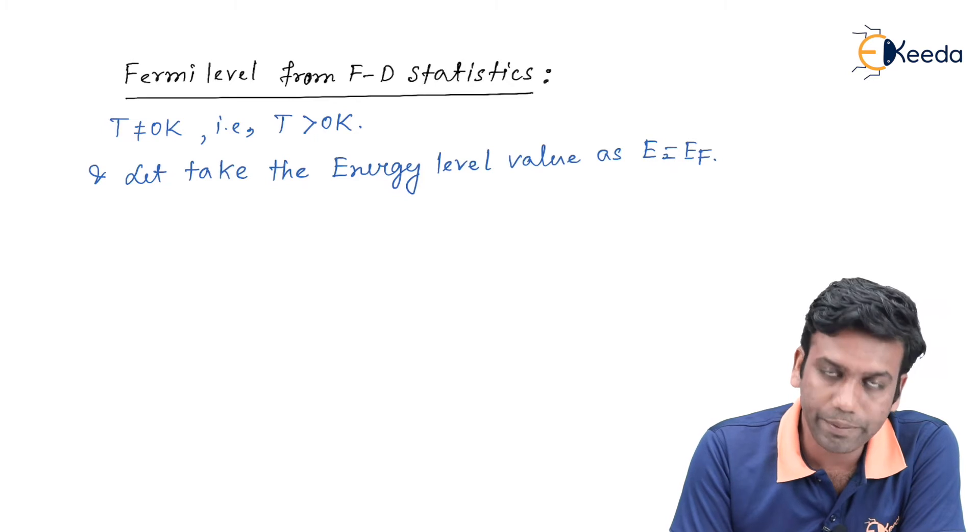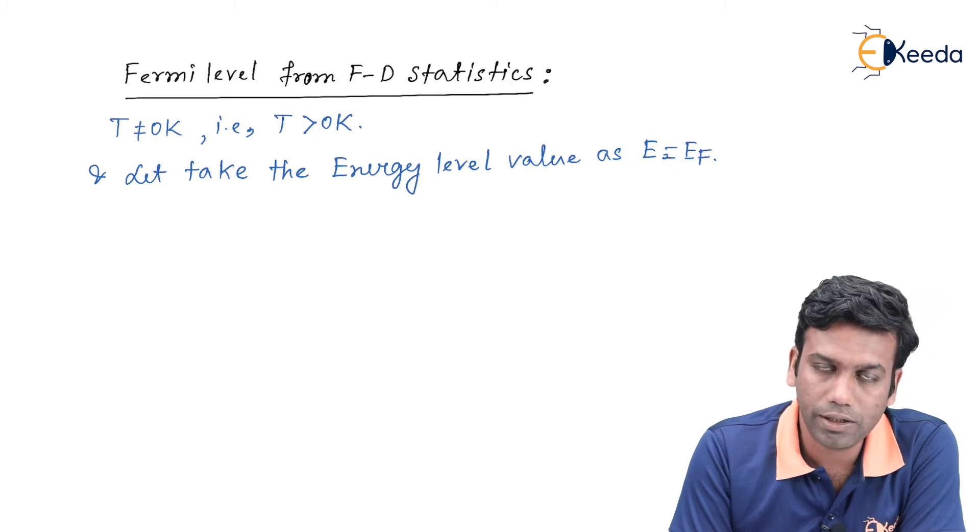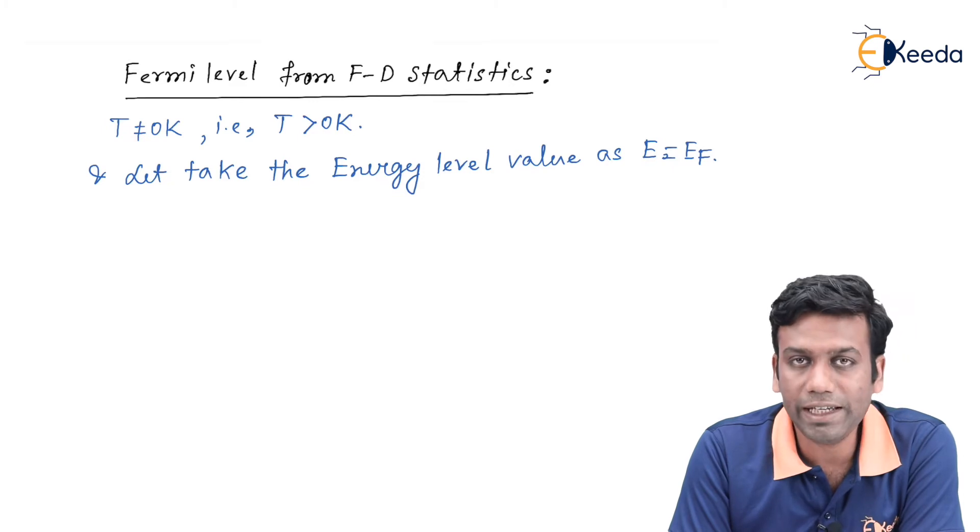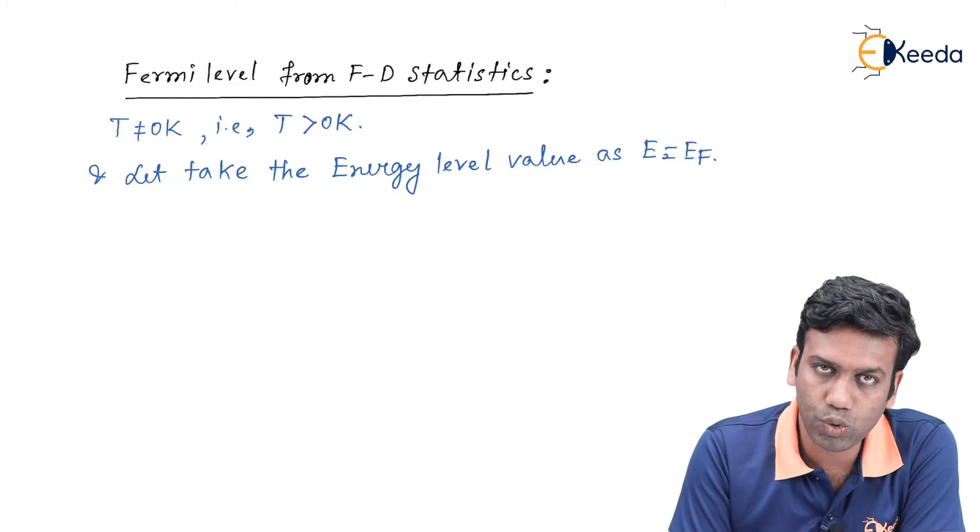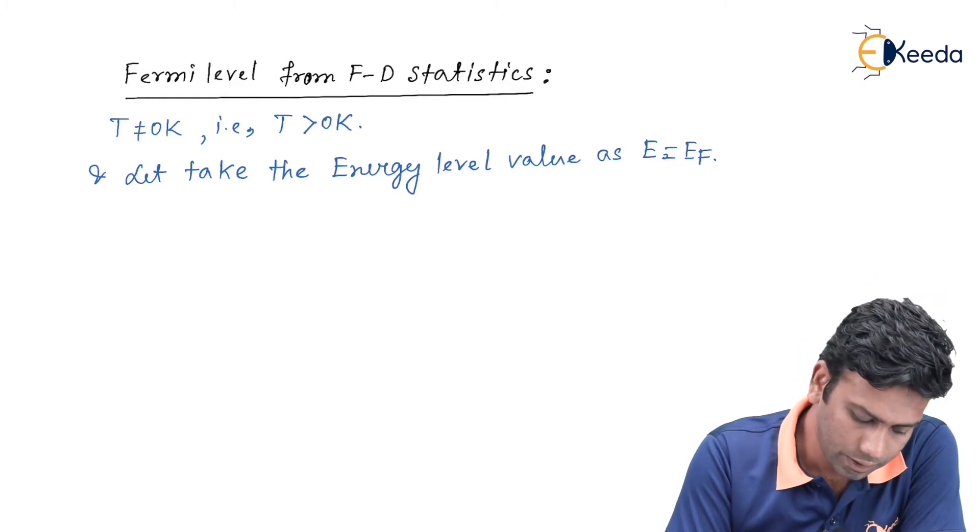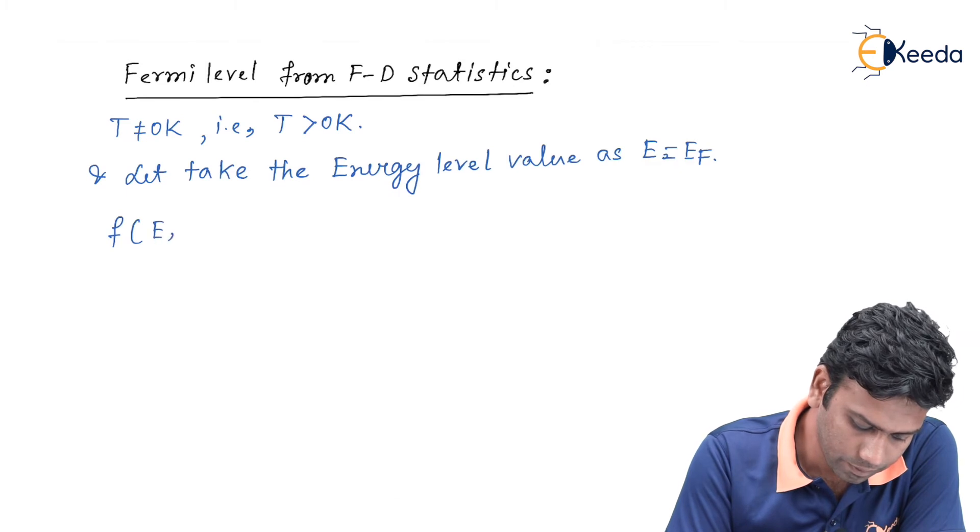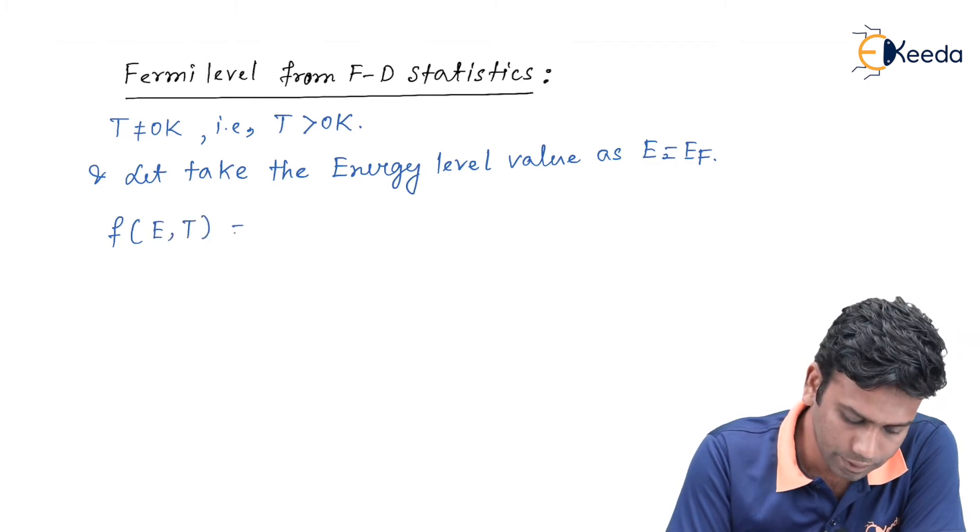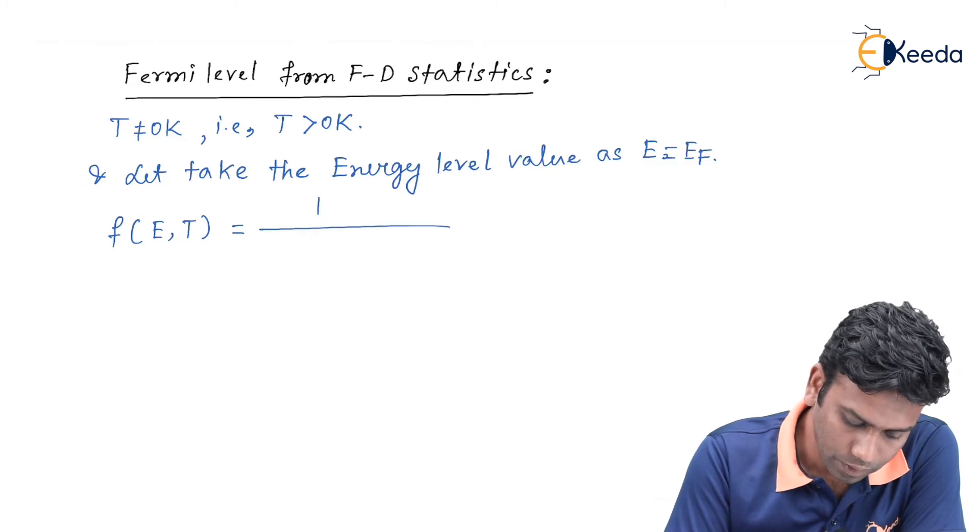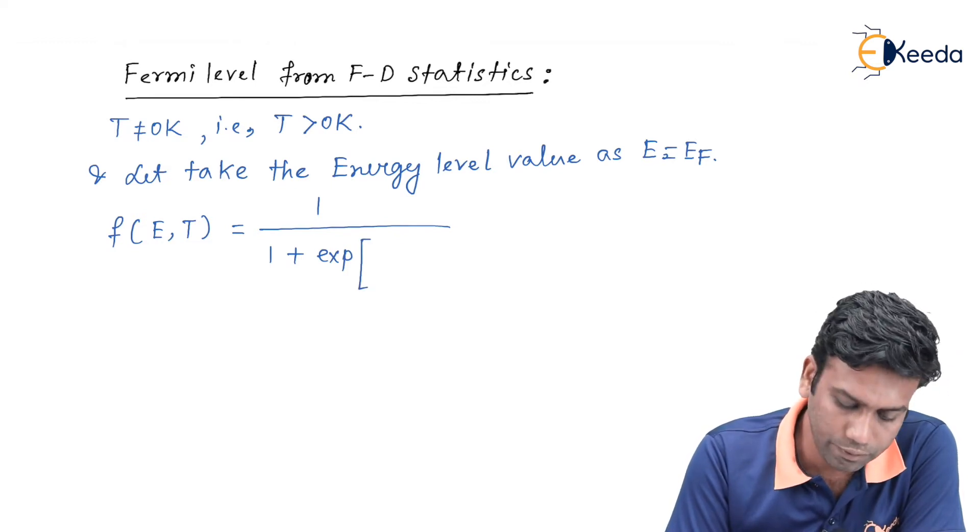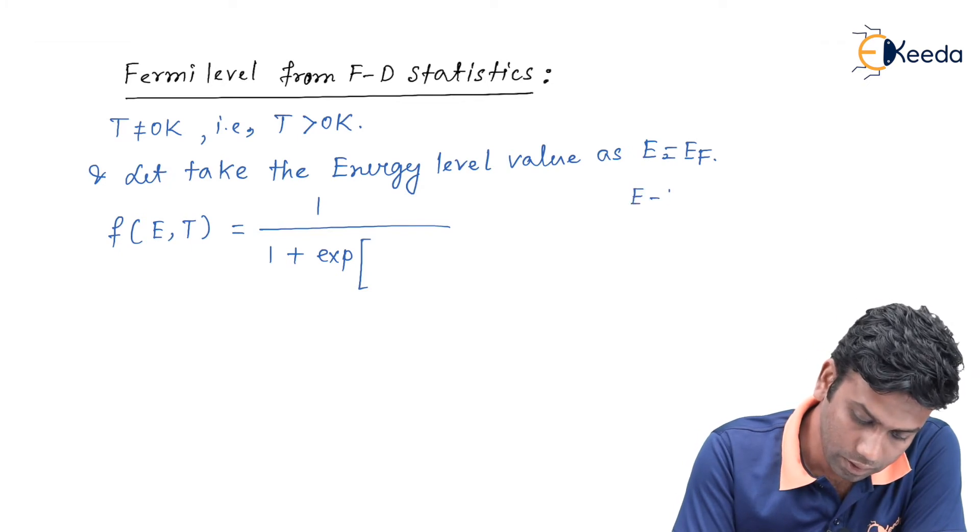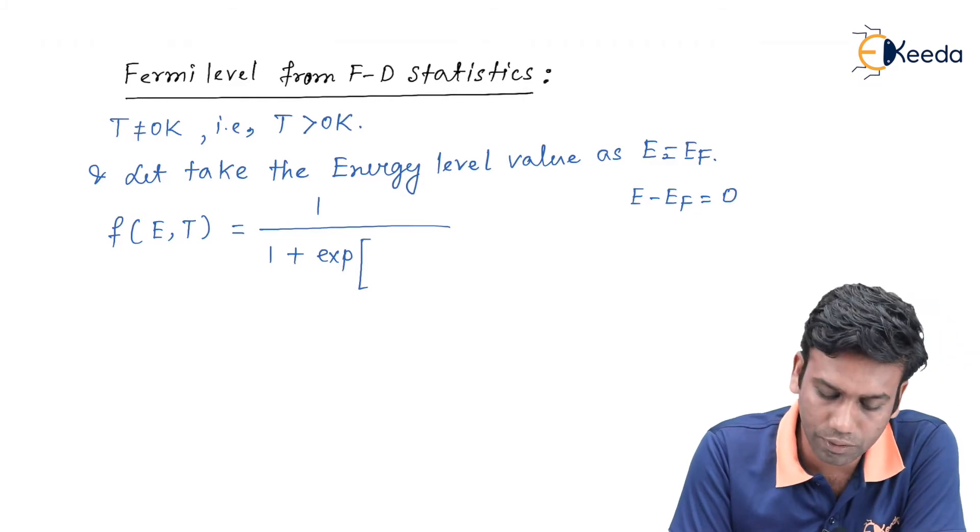That means we are going to find the probability of finding an electron at the Fermi level. At E equals to Ef, f(E,T) can be written as 1 by 1 plus exponential E minus Ef, which will be equals to 0 because E is equals to Ef.